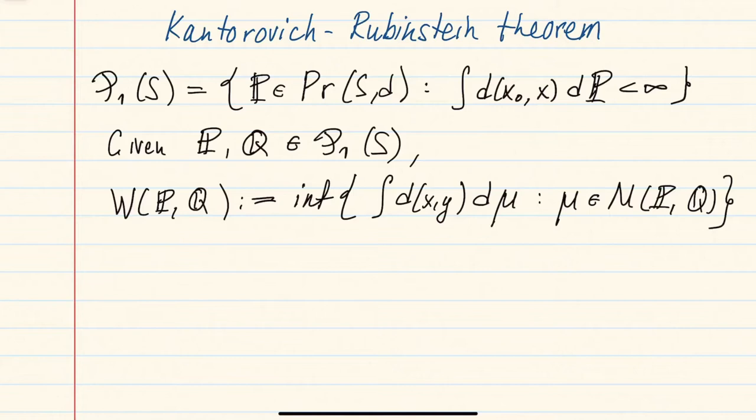In the last video we introduced the Wasserstein distance on probability measures and discussed some of its properties. In this video we are going to prove what is perhaps the most famous result about it: the so-called Kantorovich-Rubinstein duality theorem.